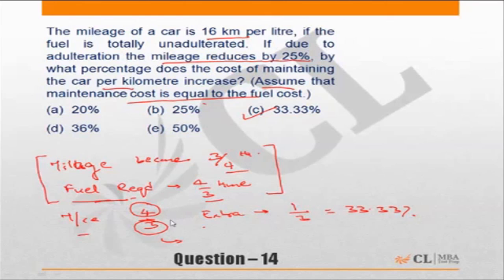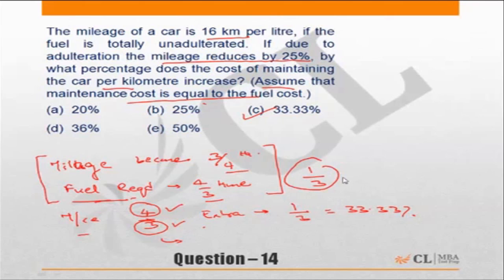If originally you are spending three rupees for maintenance, now you will spend four rupees — one rupee extra over and above what you were spending earlier, which is one-third, or 33.33 percent.